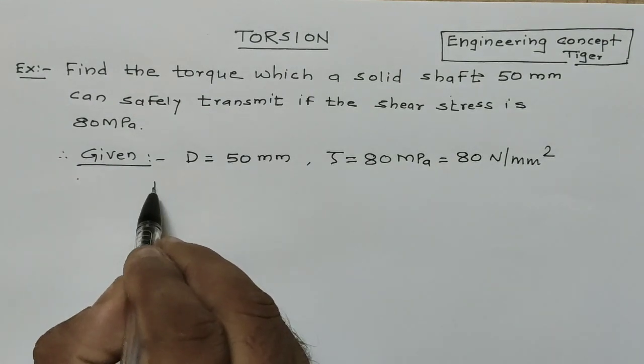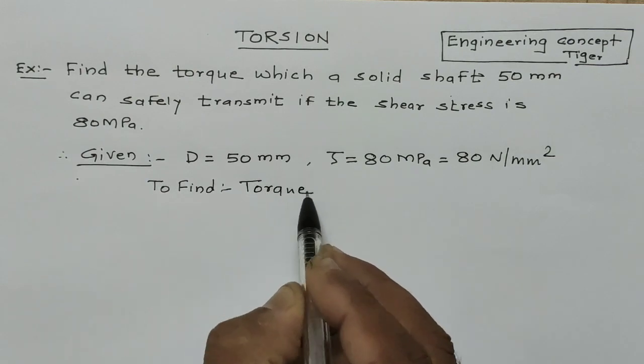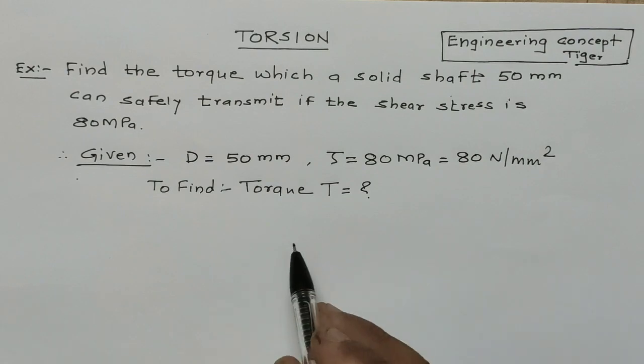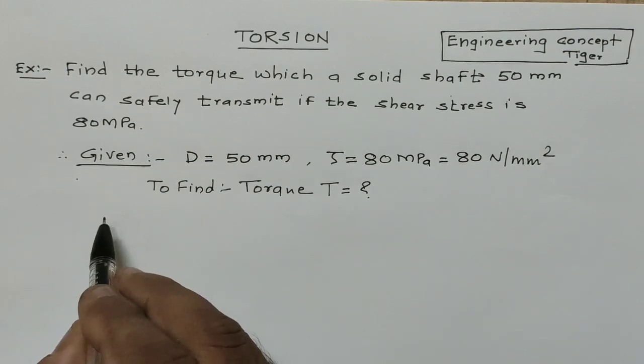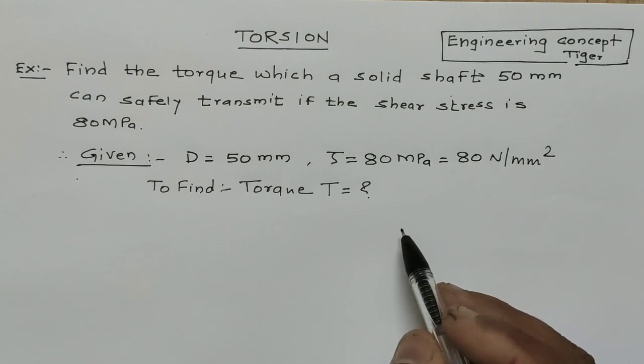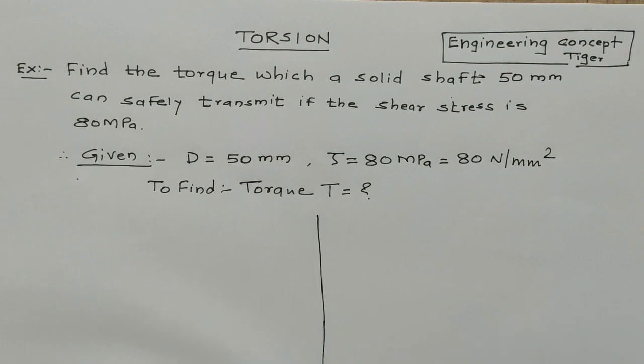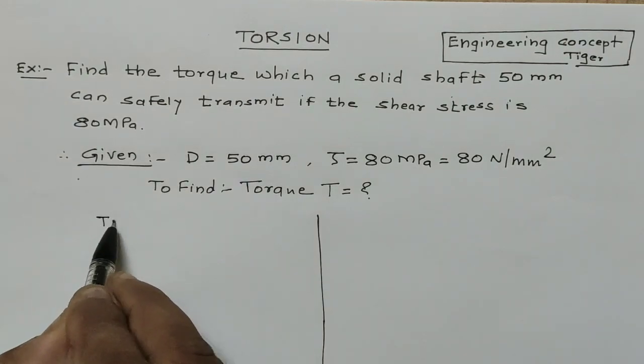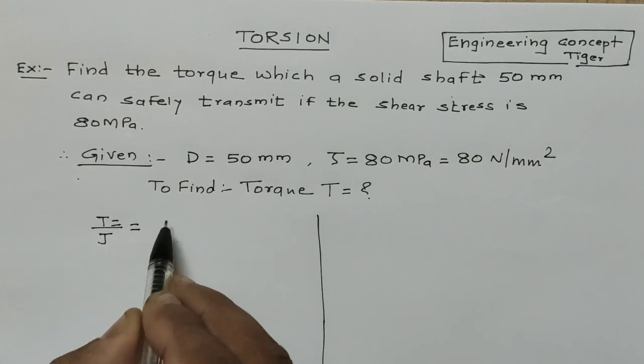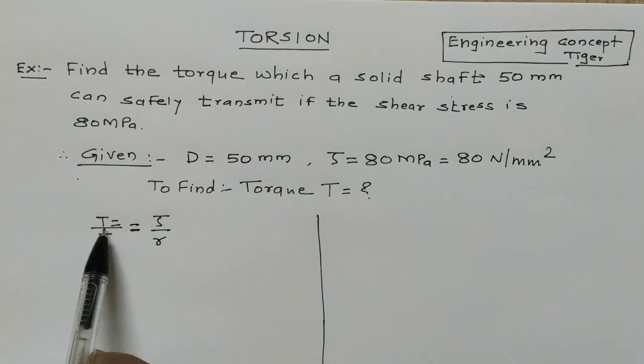Now we have to find out the torque that the solid shaft can transmit, that is capital T. We can solve this by using the basic torsional equation or by a directly derived equation. We'll solve by both methods. First, we'll take the basic equation: T/J = τ/R. This is the basic torsional equation.